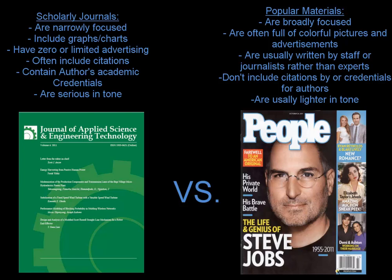Scholarly journals differ from popular materials you'd buy at the grocery store or Barnes & Noble. Popular materials are more broadly focused, colorful, with pictures and ads. They're usually written by magazine staff rather than experts in their field, and very rarely include citations or credentials for the authors — they're lighter in tone, more for entertainment. An academic or scholarly journal article is meant to support your research, to be cited in your papers, and you can find hundreds if not thousands of them in our databases.